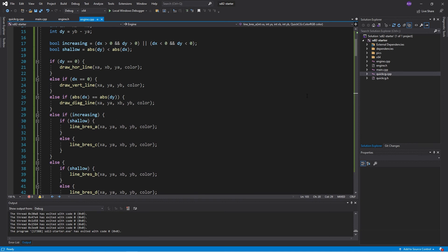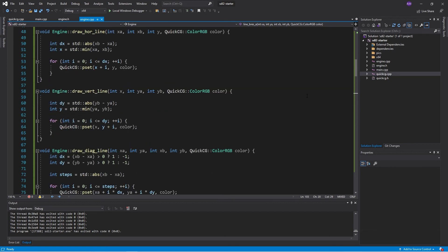Now we have some other things to consider. Our lines could be increasing or decreasing, and they could be either shallow or steep. We saw the shallow increase case. Let's look at the shallow decrease case.